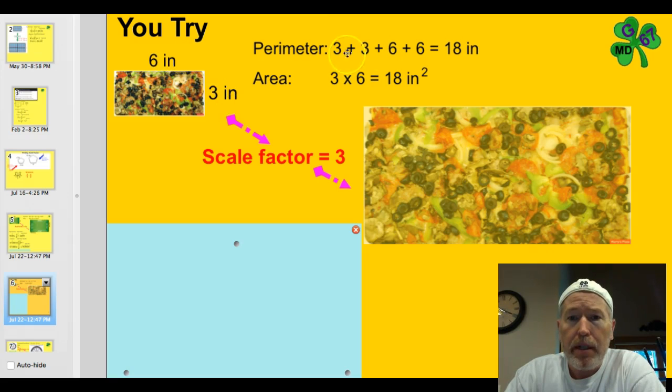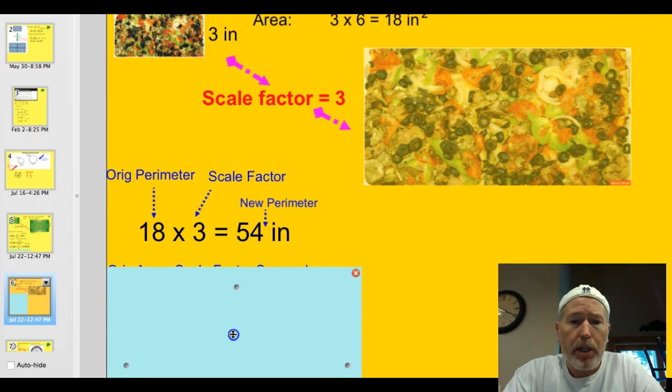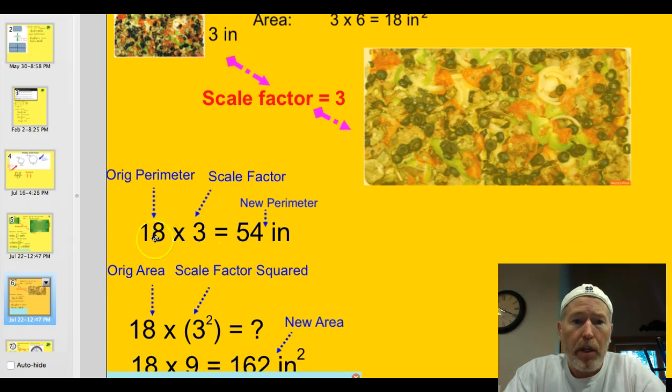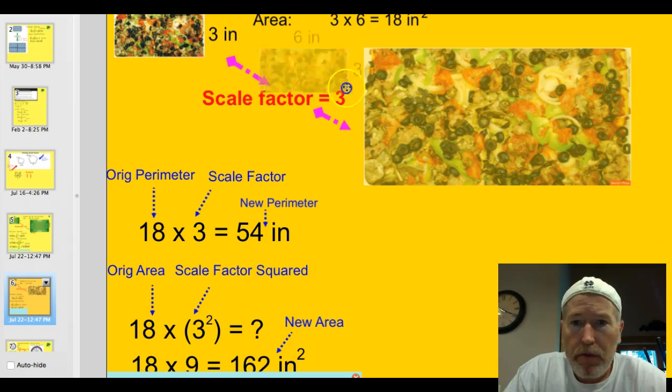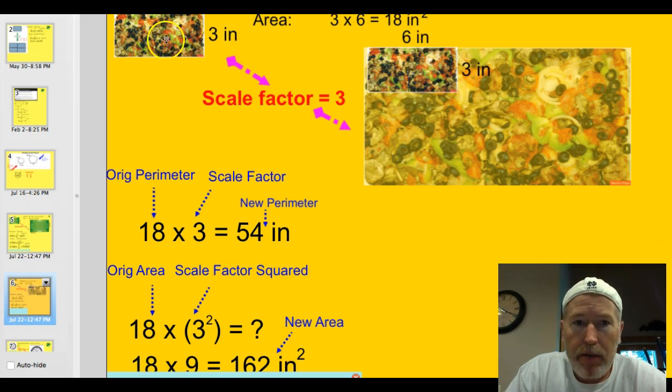First thing you have to do is determine that perimeter. Well, the perimeter of the smaller one is 18 inches. 3 and 3, 6 and 6 is 18. And the area of the smaller one, of course, is 18 inches squared. So applying those things here, let's just double check. See how this worked out. The original perimeter was 18. We take that times the scale factor of 3. We have 54 inches. That totally makes sense, too. Look at it. I could stack these guys right in here.